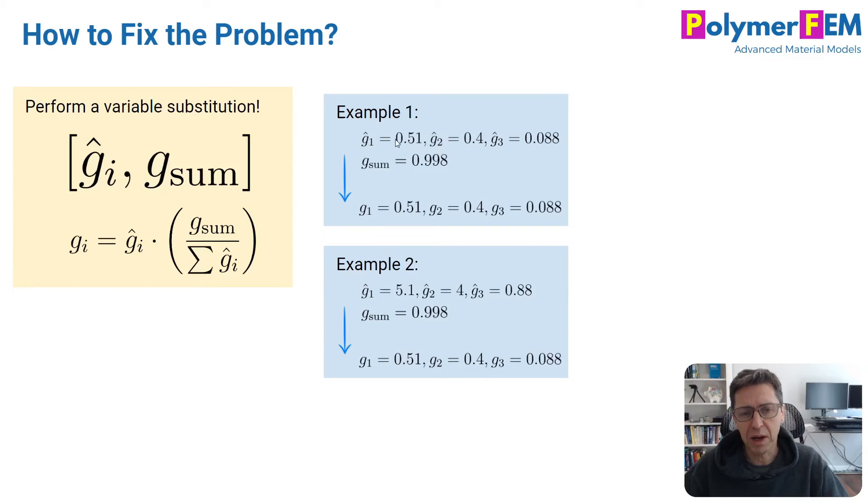Now if we multiply each of these g hat values by 10, 10 times larger, and we still say g sum equal to 0.998, we get the same g_i values as in example 2.